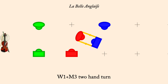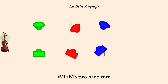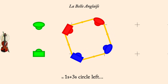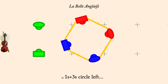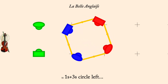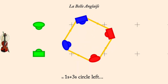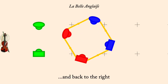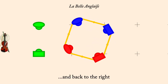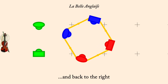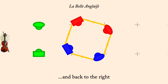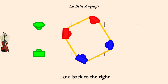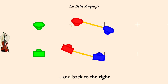Ones and threes circle left. And back to the right. Ones and twos, four changes of rights and lefts.